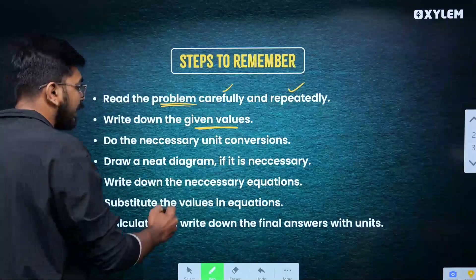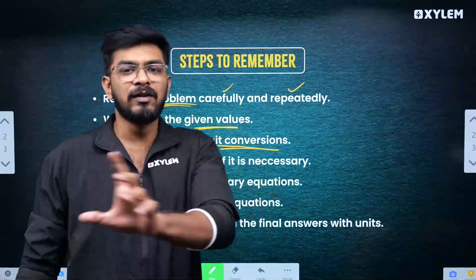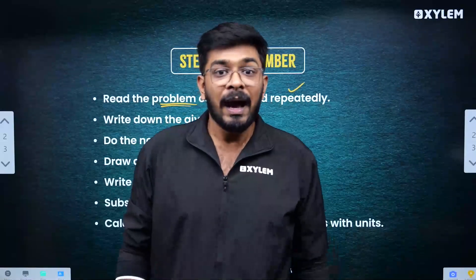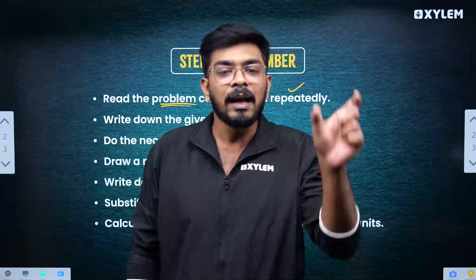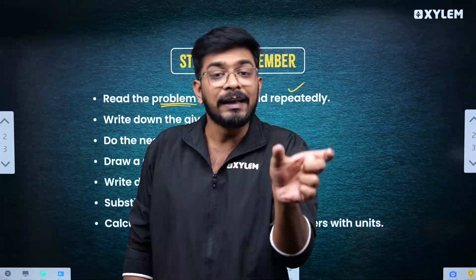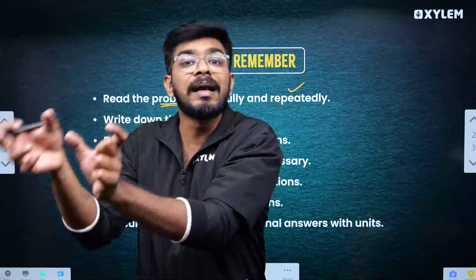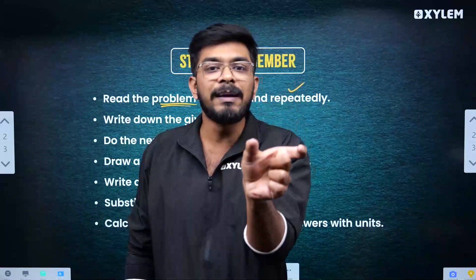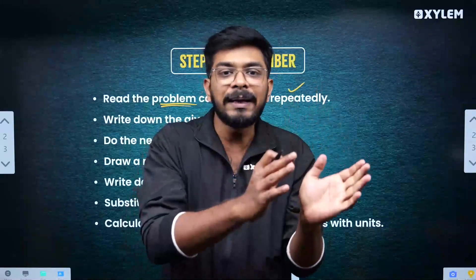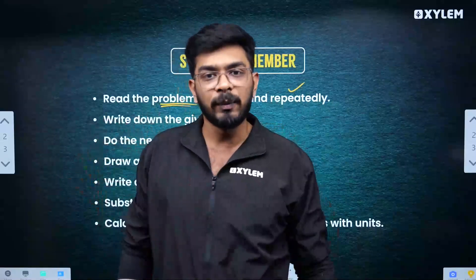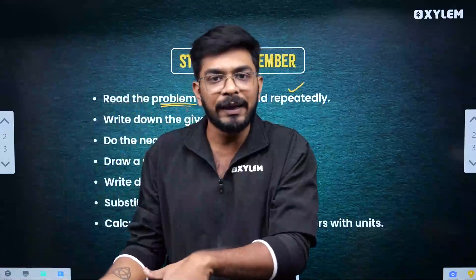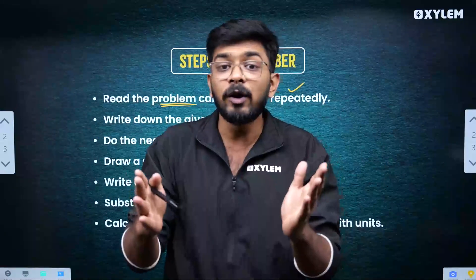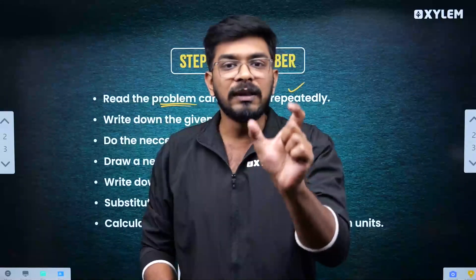The next step is to do the necessary unit conversions. For example, if the length is given in millimeters, that is not the SI unit. The SI unit for length is meters. So you convert millimeters to meters, centimeters to meters, grams to kilograms. Always convert to SI units — that is important.